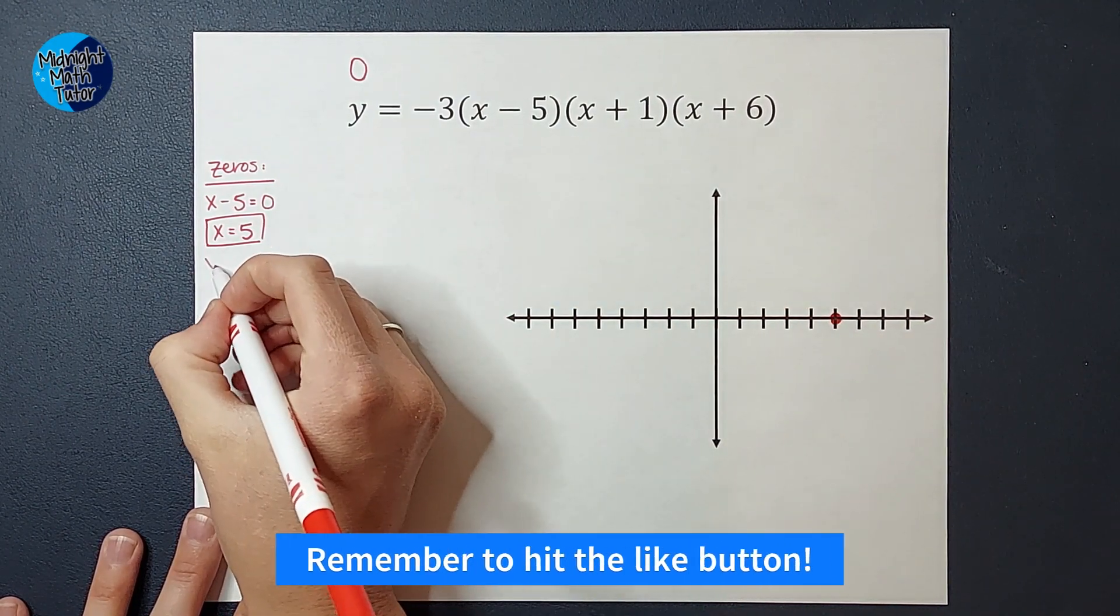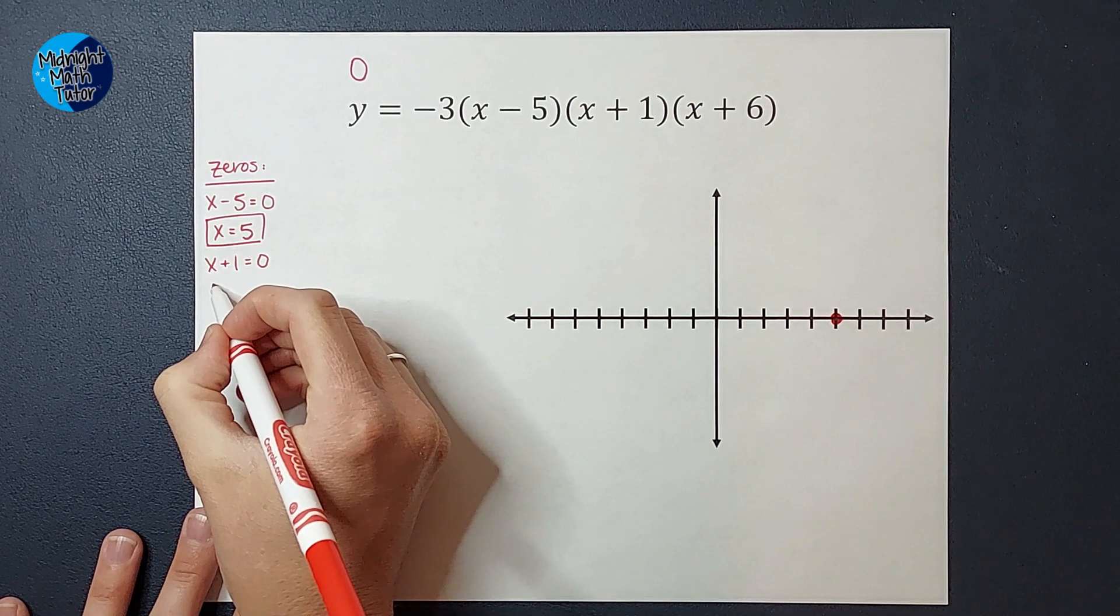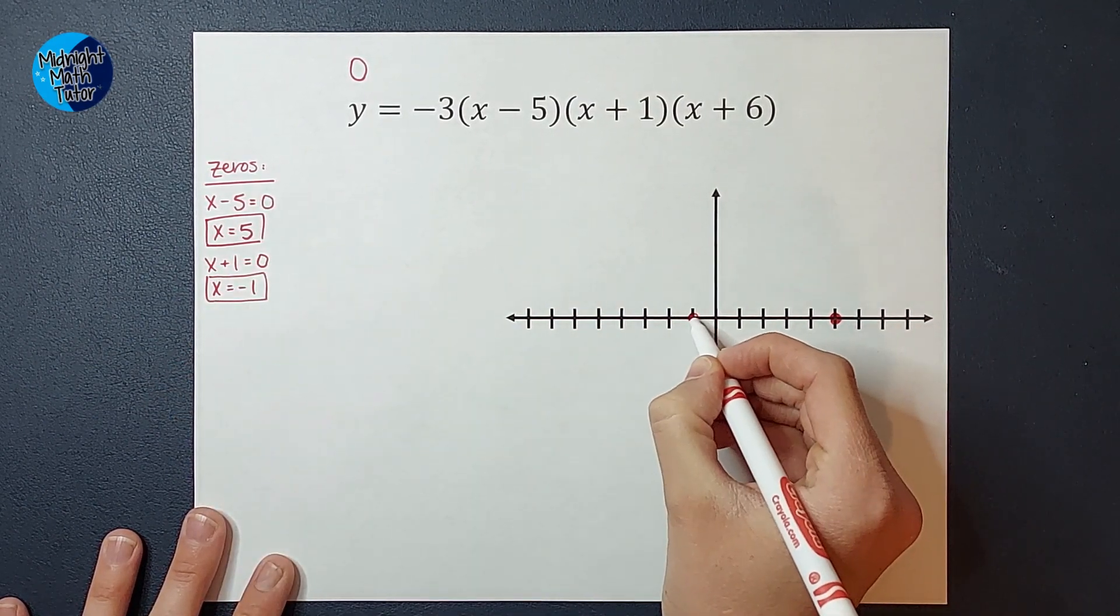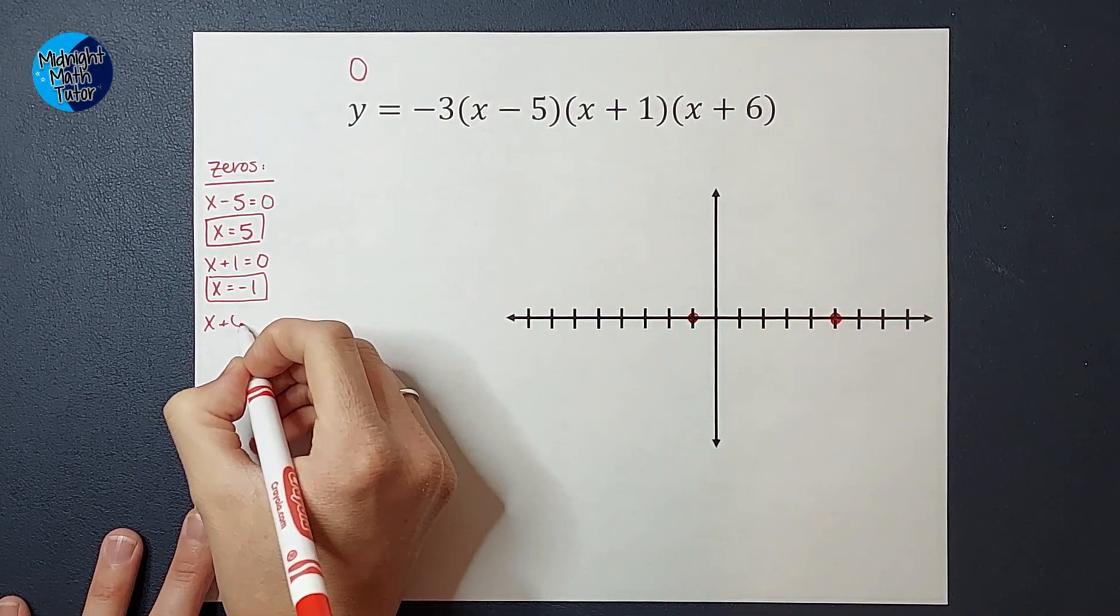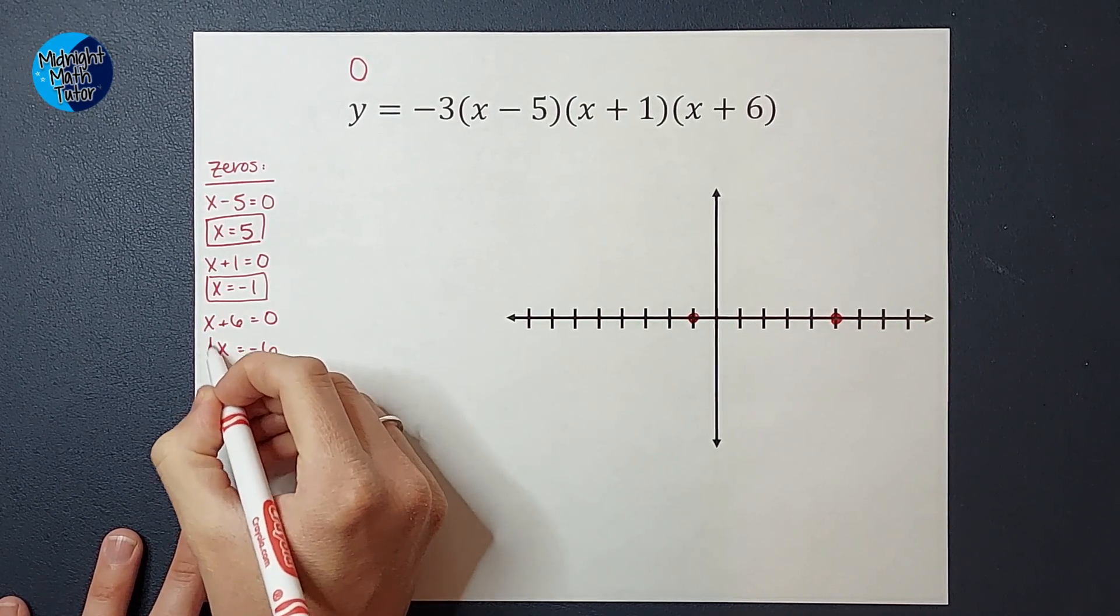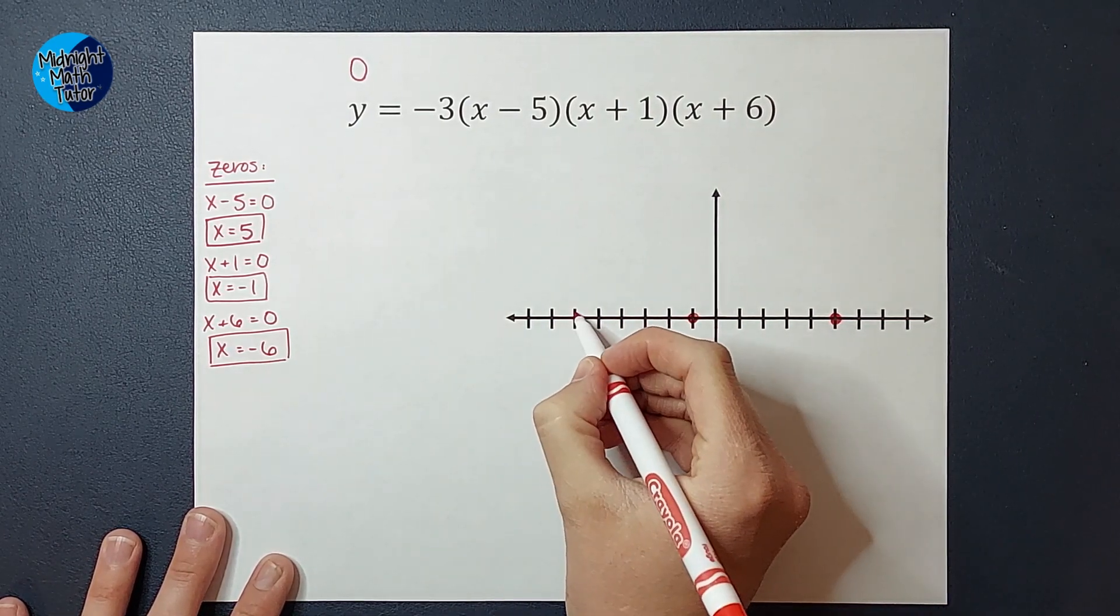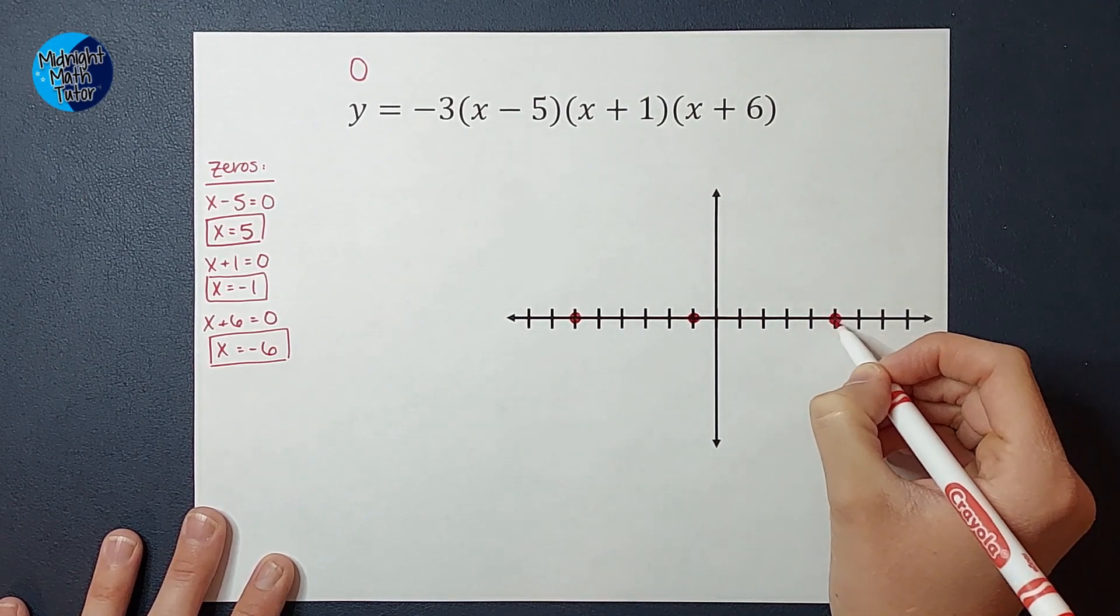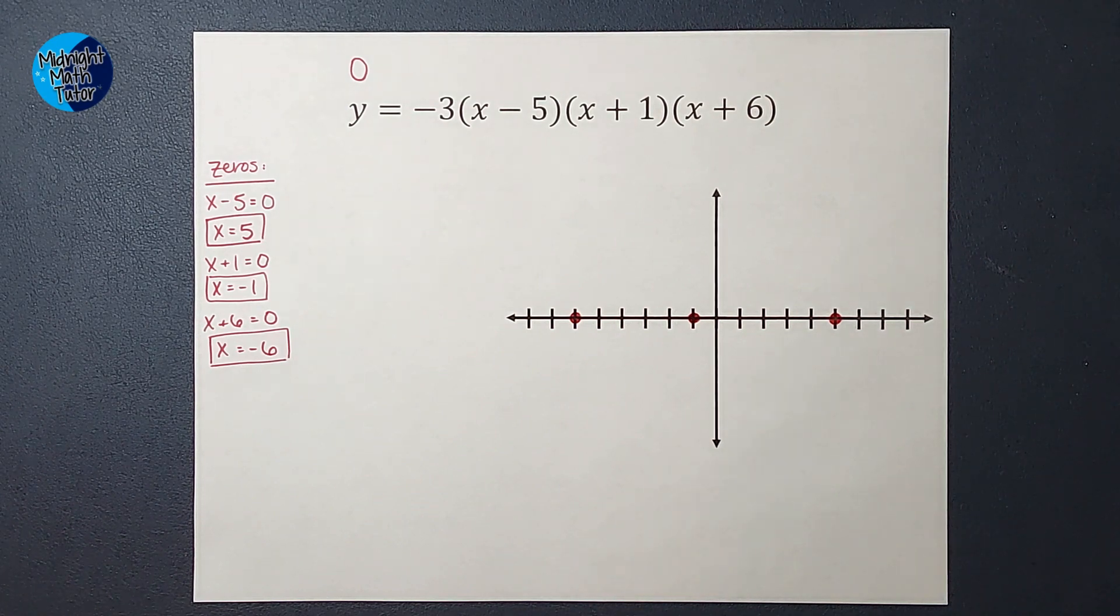Then I'm going to set this guy equal to zero, x plus one equals zero. I subtract one from both sides and get x equals negative one. So that will be right there. And then I've got x plus six equals zero. Subtract six from both sides and I get x equals negative six as another zero. One, two, three, four, five, six, right there. So those are my zeros. I know that my graph crosses those points, but what does it do from there?